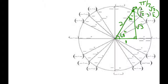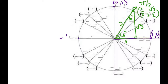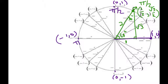Just a reminder: because the unit circle has radius 1, the ordered pair at the rightmost point is (1, 0), at the top is (0, 1), at the left is (−1, 0), and at the bottom is (0, −1). So at 90 degrees the ordered pair is (0, 1), at 180 degrees it's (−1, 0), and at 270 degrees it's (0, −1).